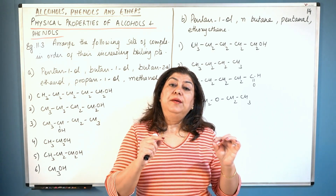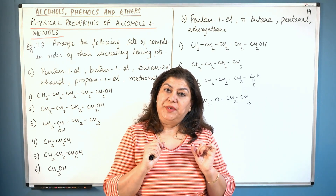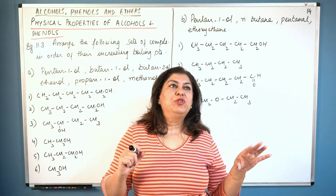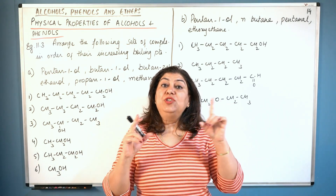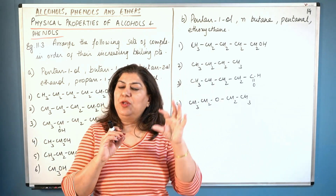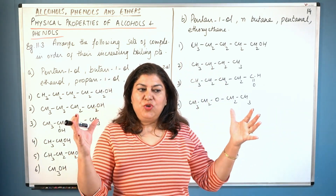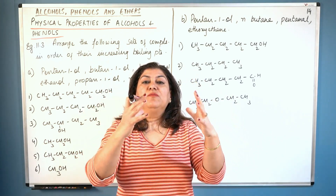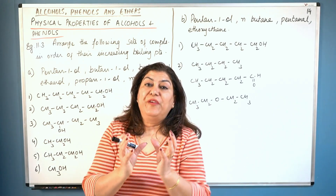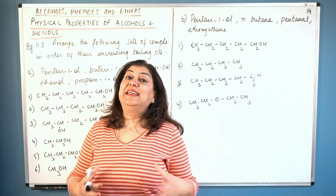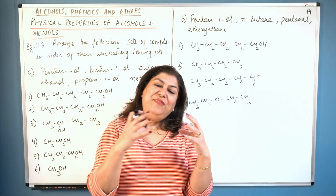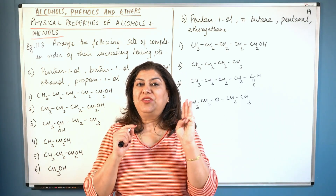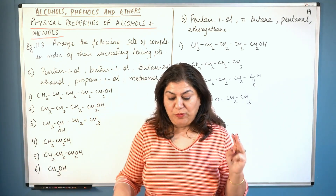The more branched a structure is — for example, butan-1-ol and butan-2-ol — butan-2-ol has the OH attached on the second carbon. As branching increases, the compound becomes more and more spherical, therefore the surface area decreases. As the surface area decreases, the boiling point decreases. So those are the three things to look out for when solving this problem.